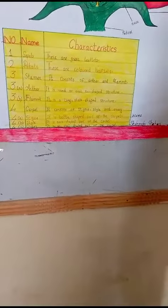The third part is the ovary. It is the oval-shaped part of the pistil. Thank you.